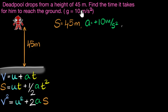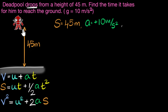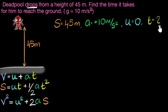There's one more piece of information, which is pretty important. It's given that Deadpool drops from the height of 45 meters. Whenever something is dropped, we know its initial velocity is zero. So we know the initial velocity U of Deadpool is zero. And we are asked to calculate the time it takes for him to reach the ground — that means we need to find what T is.